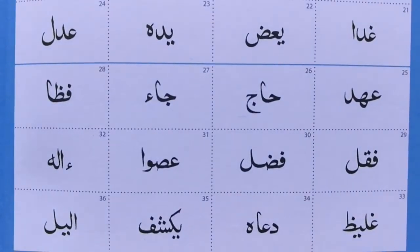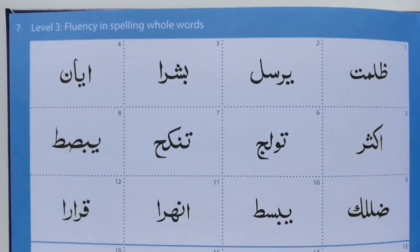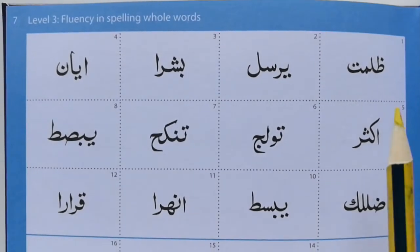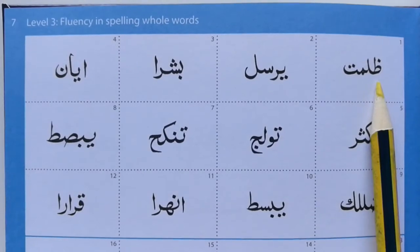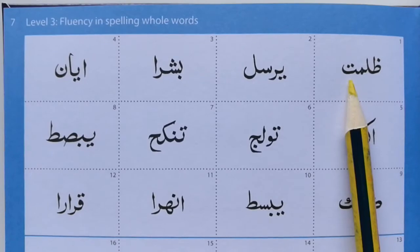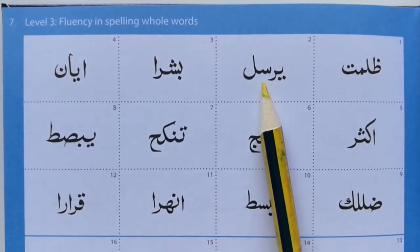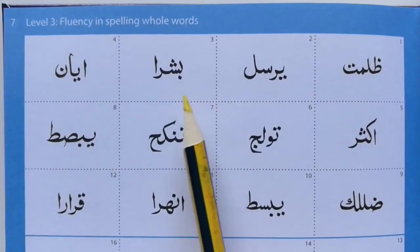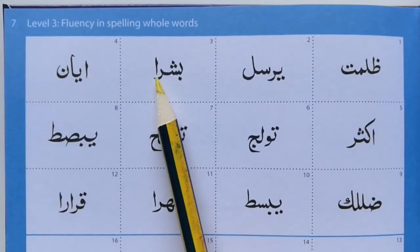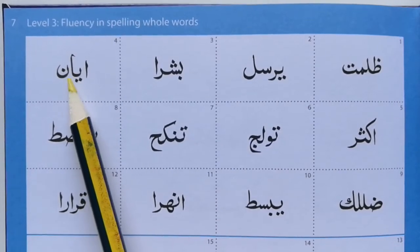Okay, so we move on to the next page, carrying on on this topic of four-letter words. Starting at the top: Wah, Wa, Wa, Laam, Mim, Mim, Taa, Ya, Ra, Ya, Ra, Sin, Land, Laam, Baa, Sheen. Ra, Alif, Alif, Yaa, Alif.